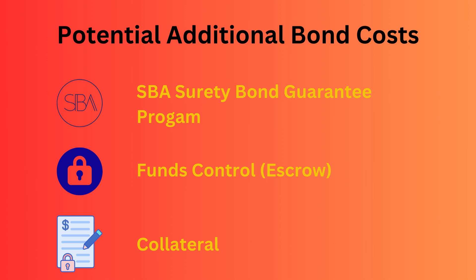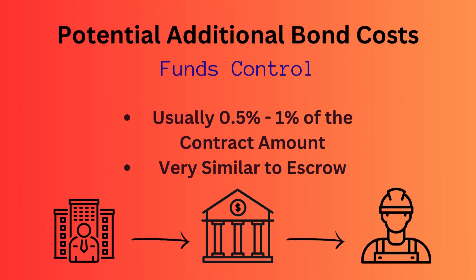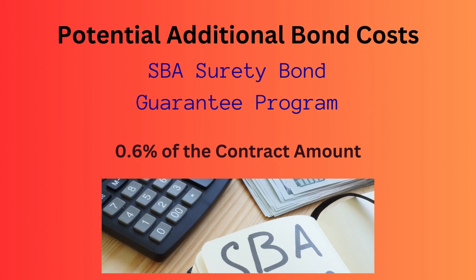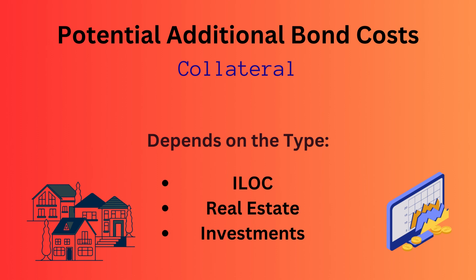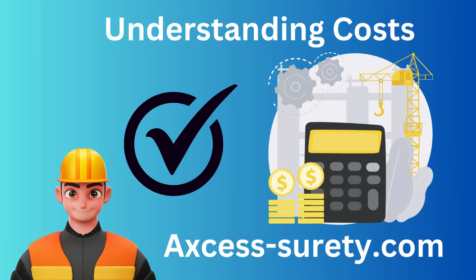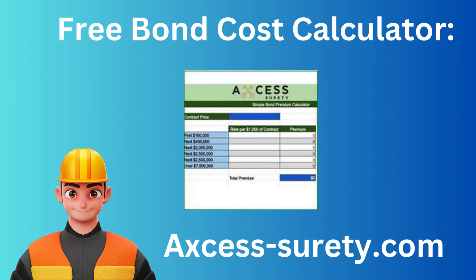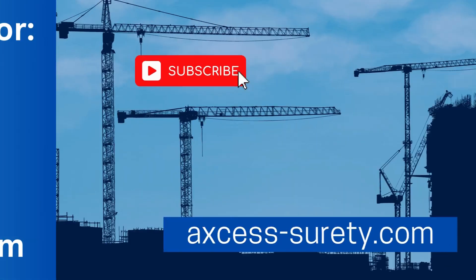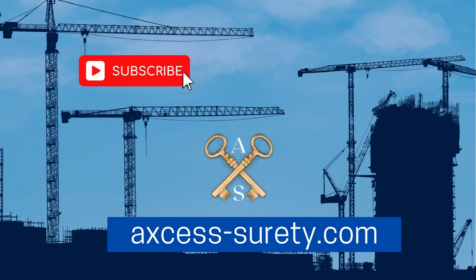Maintenance rates are fairly low when included with performance bonds. However, most bond companies charge significantly higher rates if a maintenance-only bond is needed, and the bond premium for these maintenance bonds starts right away instead of after 12 months. If a surety bond company requires a contractor to use tools to write a performance or payment bond, it will also add to the cost. Three tools used to help write performance bonds include funds control or escrow, the SBA Surety Bond Guarantee Program, and collateral. Funds control generally costs between 0.5% and 1% of the total contract; the SBA Bond Guarantee Program costs 0.6%; and collateral costs depend on type, often involving the contractor's lender if an irrevocable letter of credit is used. If these tools are required, the cost is added to the normal bond premium.